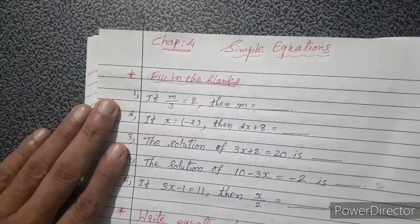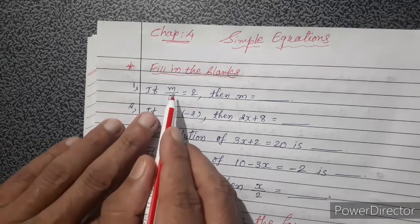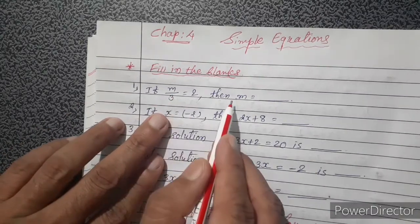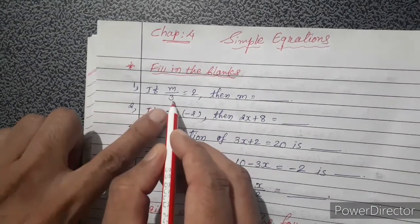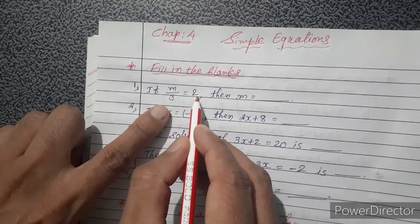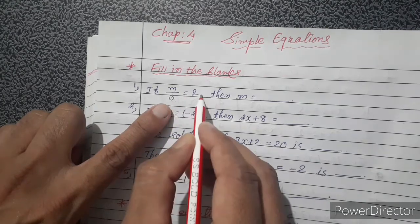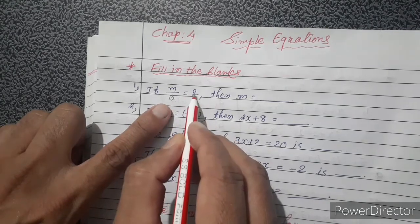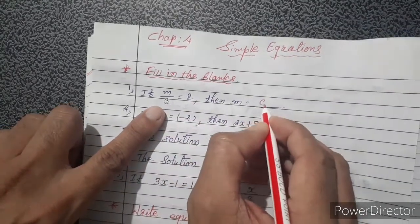Fill in the blanks. If m divided by 3 equals 2, then m equals? So 3 is in division form. Here we change the side — division becomes multiplication. So 3 into 2 is 6, meaning m equals 6.